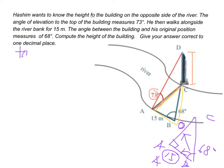So tangent 68 is opposite, which is AC, over adjacent, which is 15 meters. So we can find out AC. AC is 15 times tangent 68 degrees, and using a calculator we'll get the answer 37.13 meters.